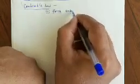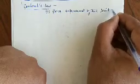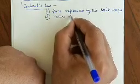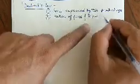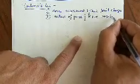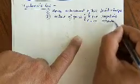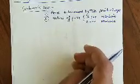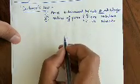Coulomb's law tells us about, first, the force experienced by two point charges. Second, it tells us about the nature of the force — if the force is positive, its nature is repulsive; if the force is negative, its nature is attractive. Coulomb's law is applicable for point charges and tells us the force between them.